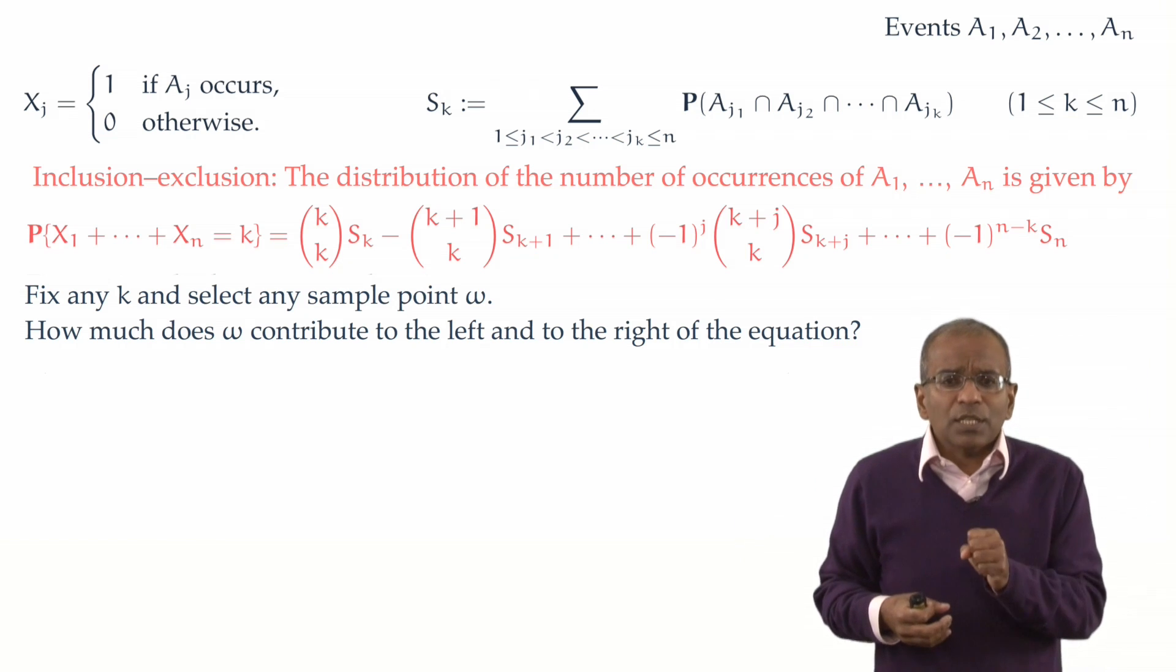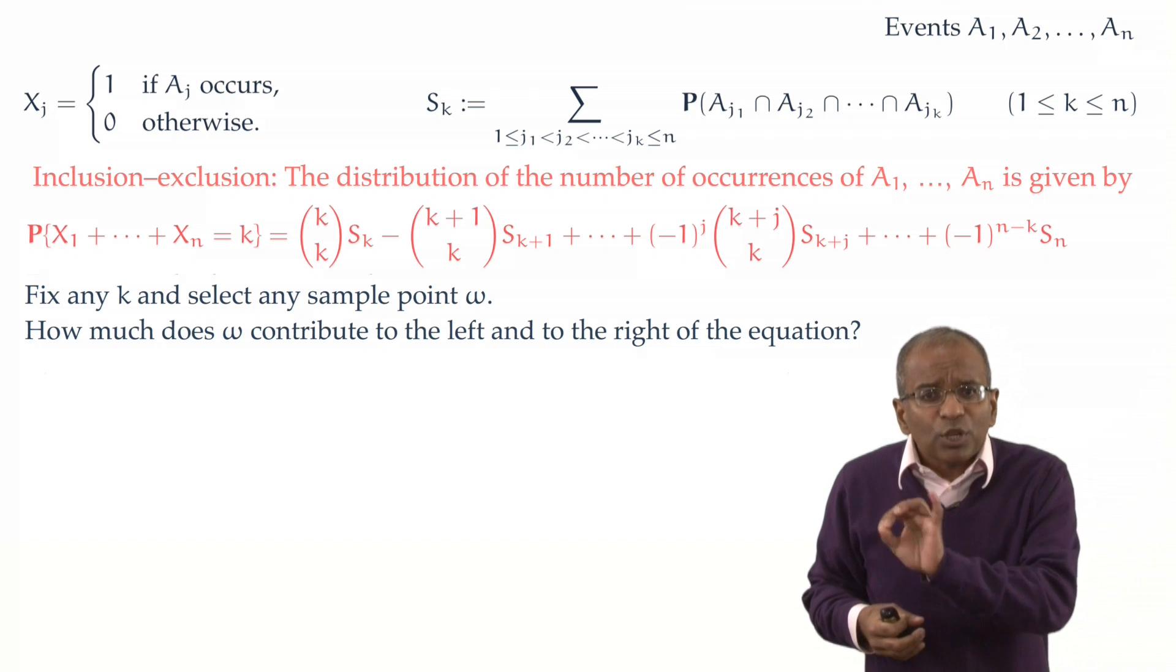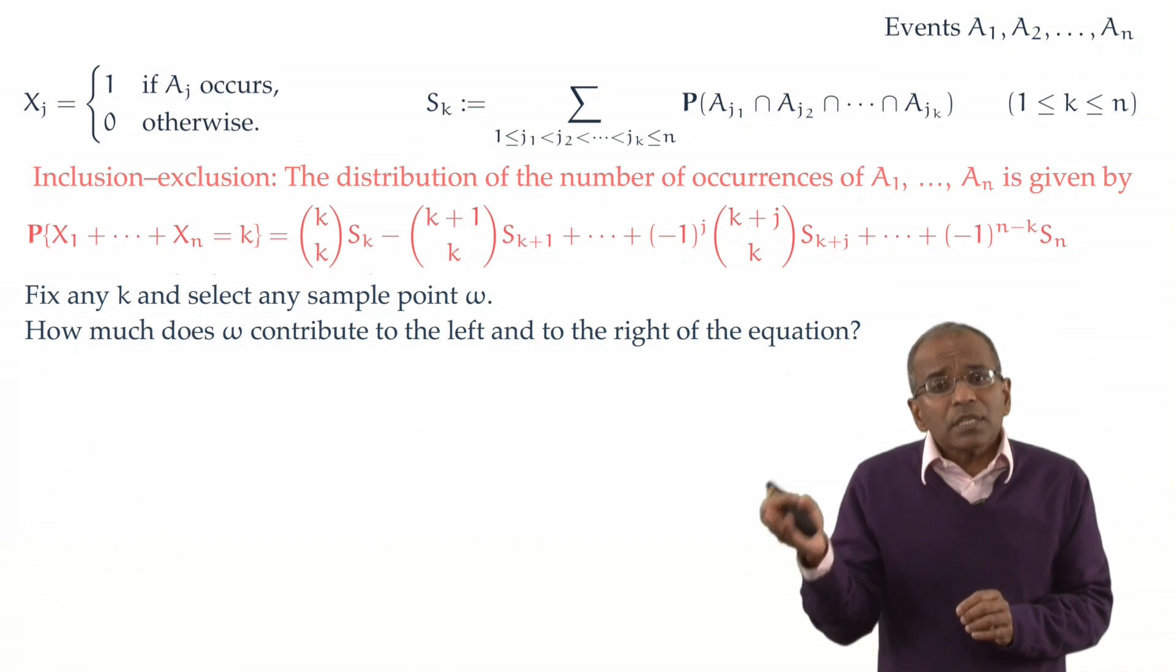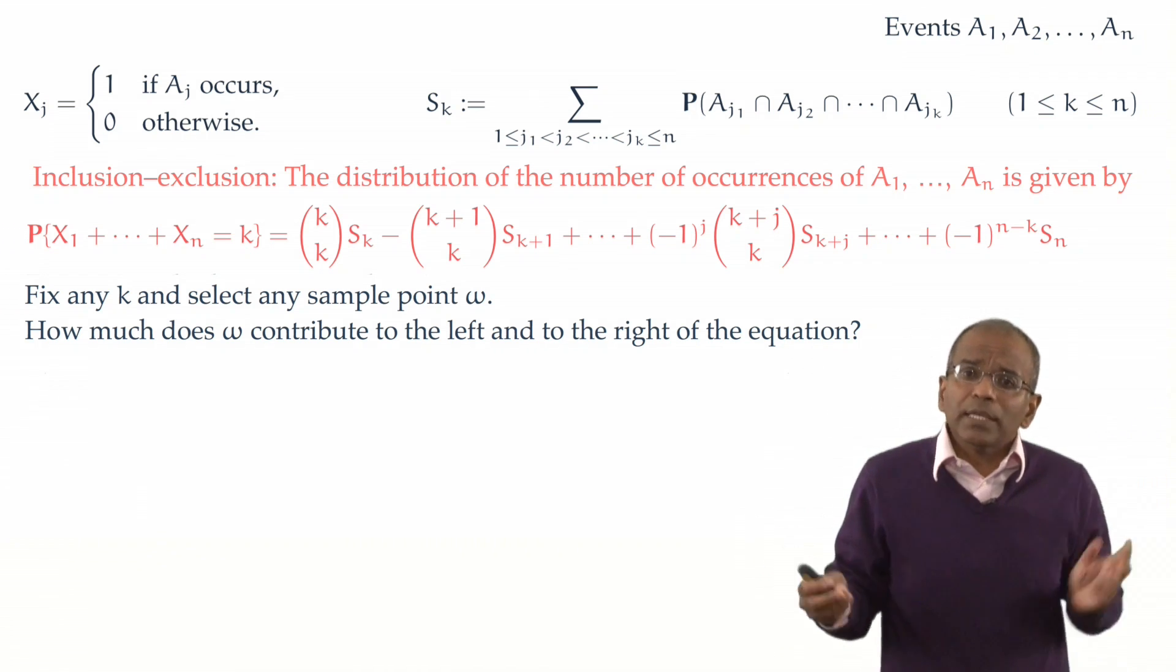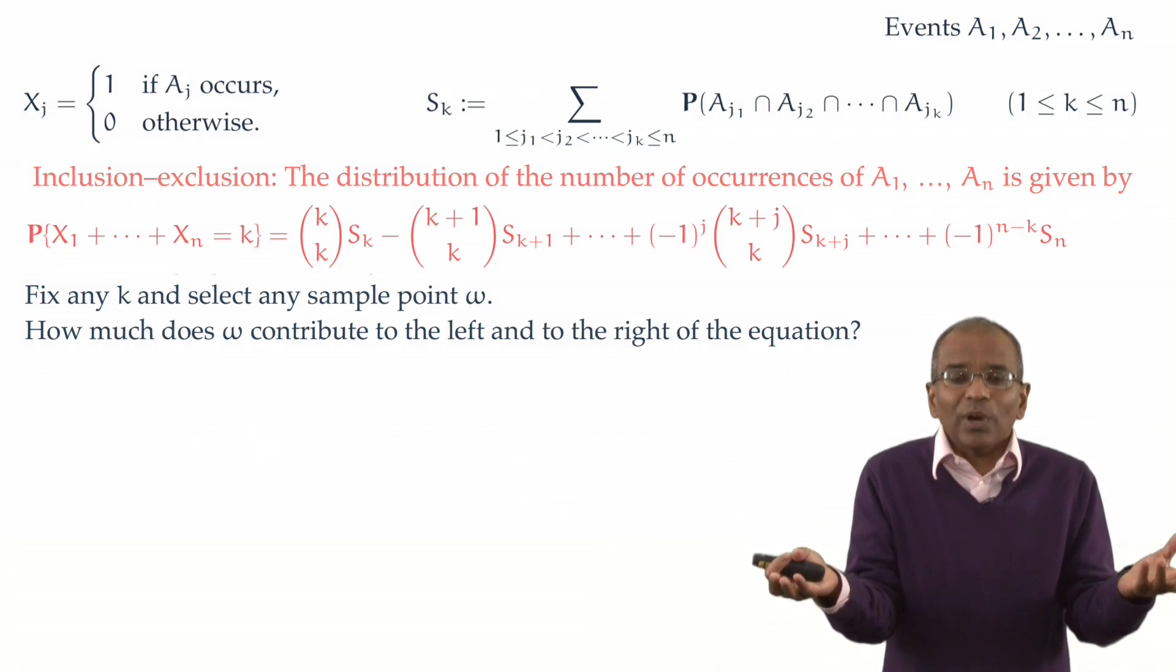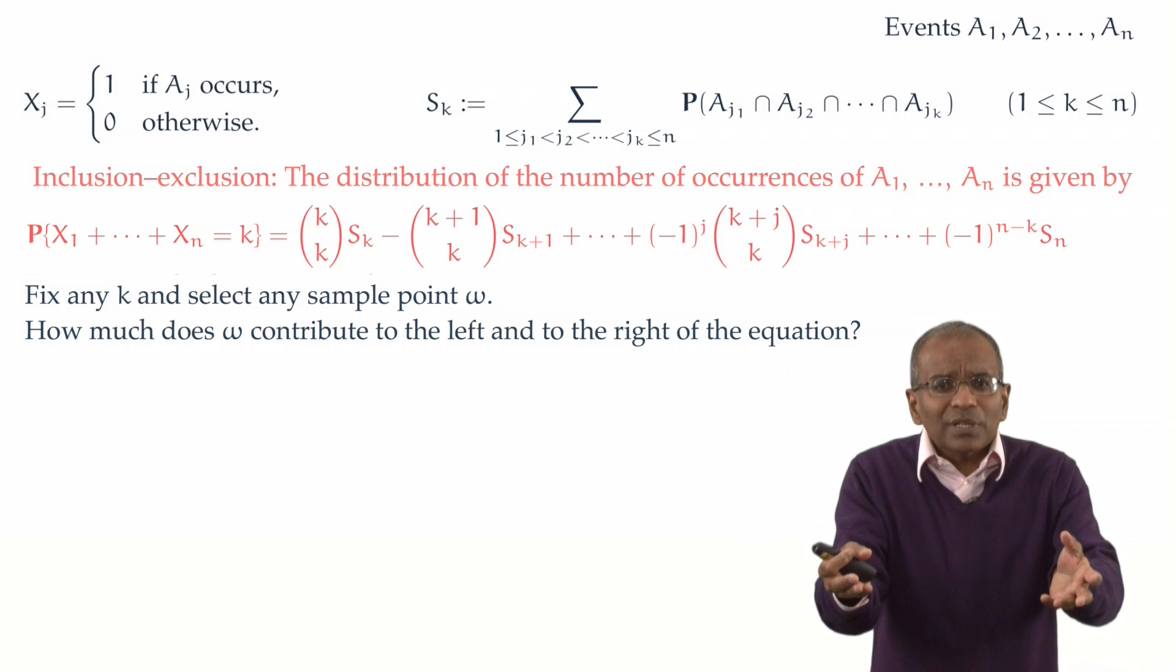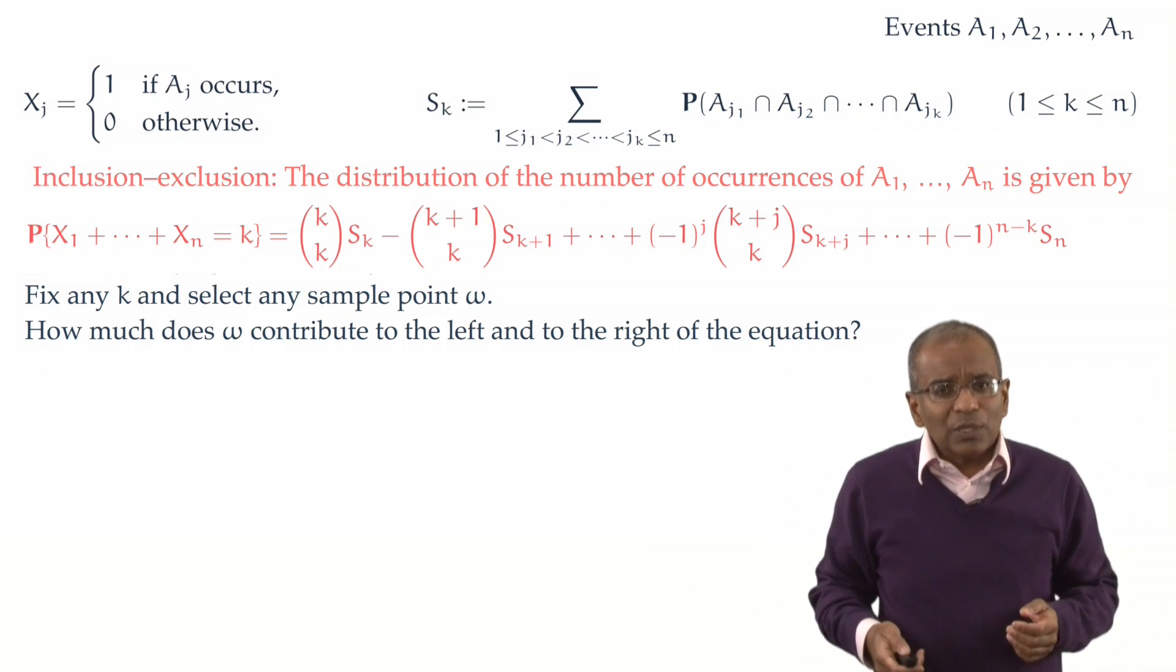Pick a sample point and ask this equation. How much does this sample point contribute to the left-hand side of the equation and to the right-hand side? If it contributes an equal amount to the left and to the right, and this is true for every sample point, then we will approve the principle of inclusion and exclusion.